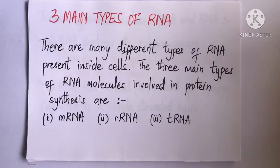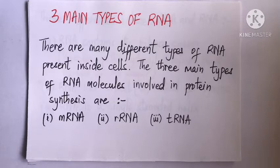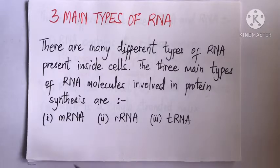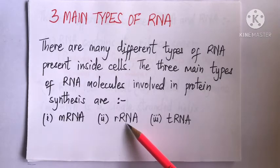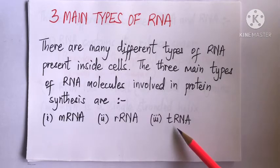Generally speaking, there are many different types of RNA present in our cells. However, in this video lesson, I'll focus on the three main kinds of RNA molecules that perform different but cooperative functions in protein synthesis. And they are mRNA, rRNA, and tRNA.